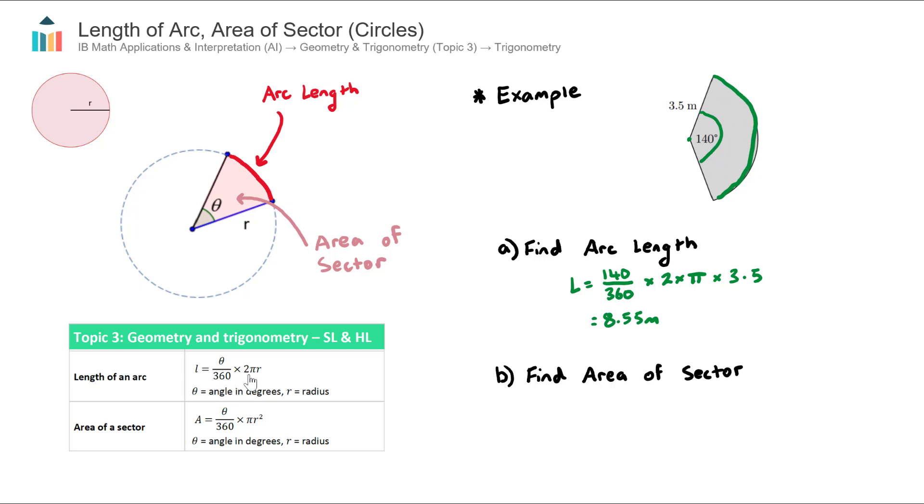I like to think about this as the proportion of the circle that is our sector multiplied by the total circumference of a circle with a particular radius.